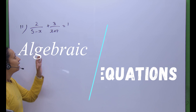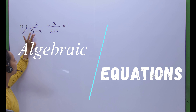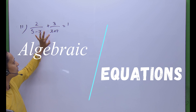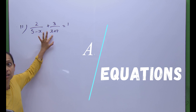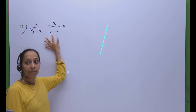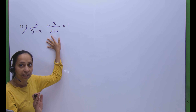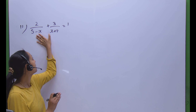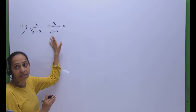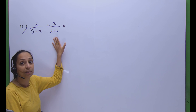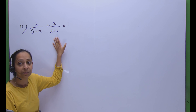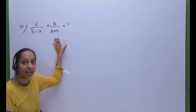Let's start our statement: 2 over (5 minus x) plus 3 over (x plus 7) is equal to 1. We have to take LCM; the LCM will be (5 minus x) and (x plus 7).